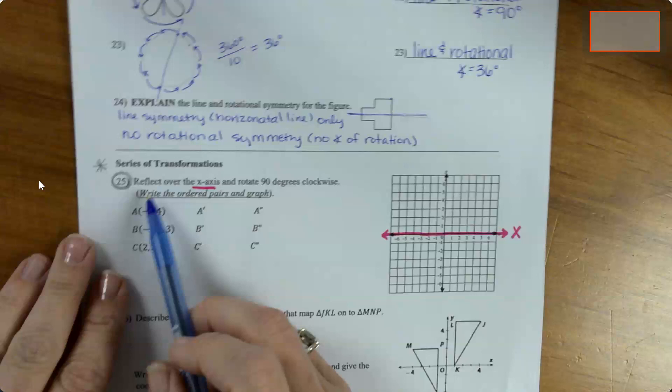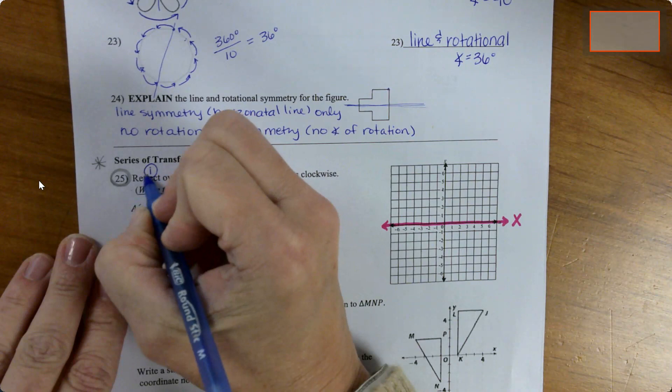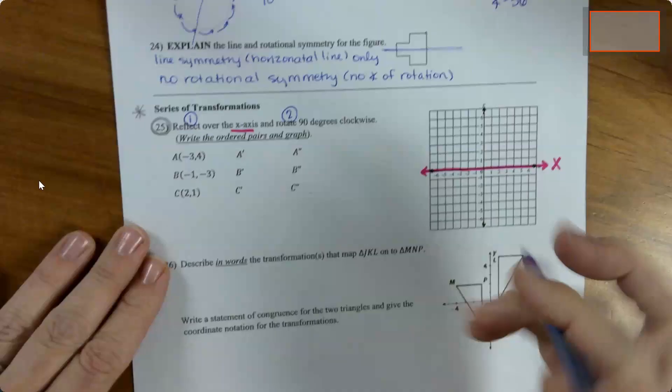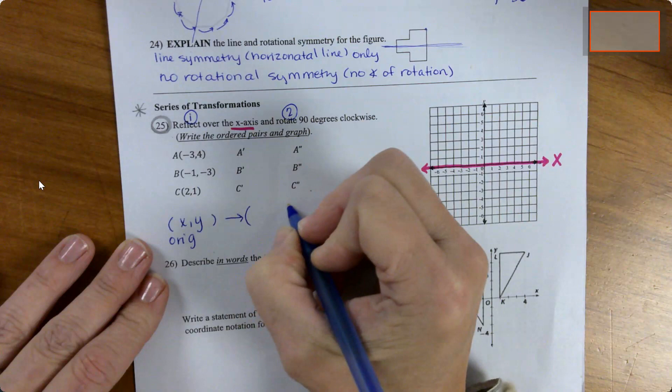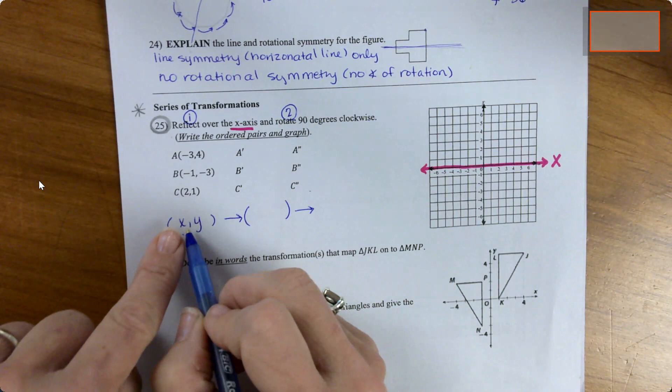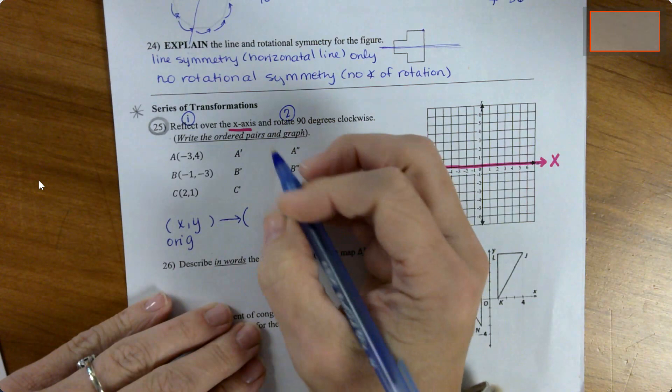This first one, number 25, says to reflect over the x-axis. That's the first thing that we do. And then we will rotate 90 degrees clockwise. Just to clarify something with these coordinate notation rules, this is your original. When we're gonna reflect over the x-axis, the x's stay the same, the y's are gonna become their opposite.